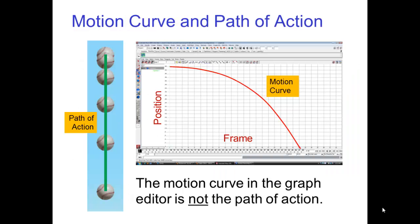Finally, in computer animation, the motion of an object is often manipulated by drawing a motion curve in the graph editor. This motion curve indicates the position, or more precisely the coordinates, for an object on different frames.